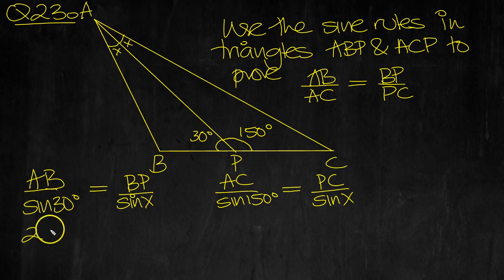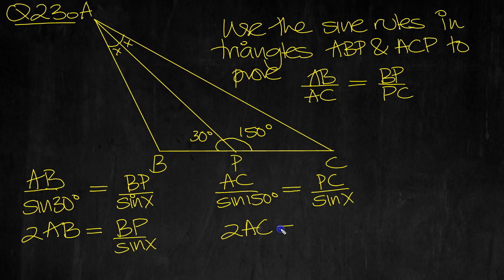So 2AB is equal to BP over sine X, and here we've got 2AC is equal to PC over sine X.